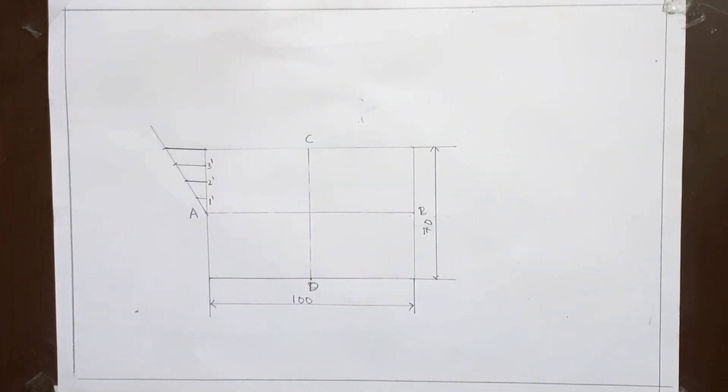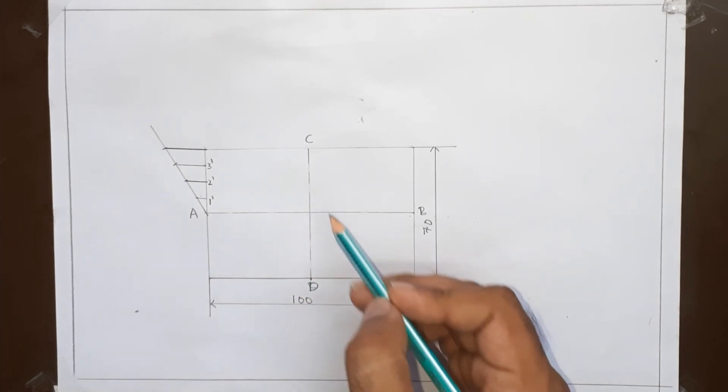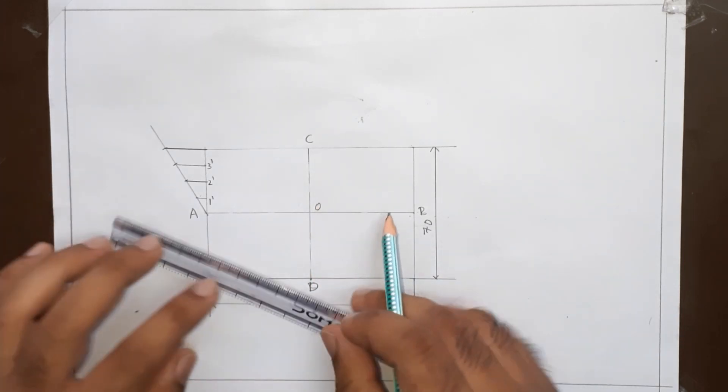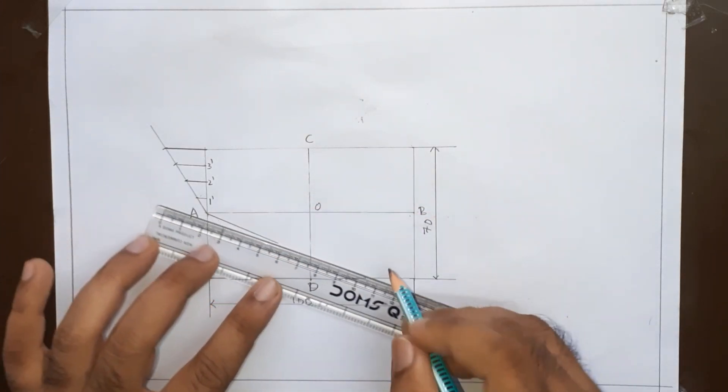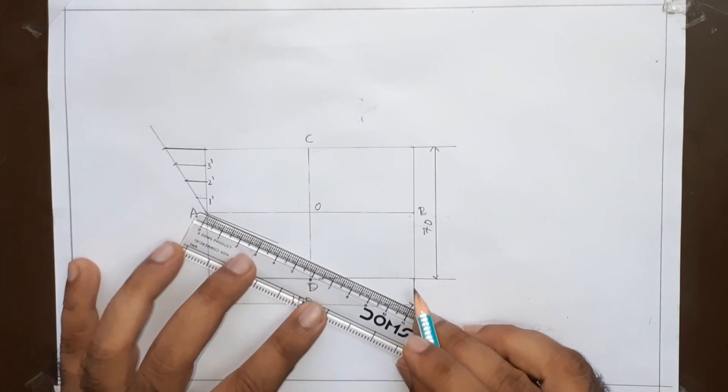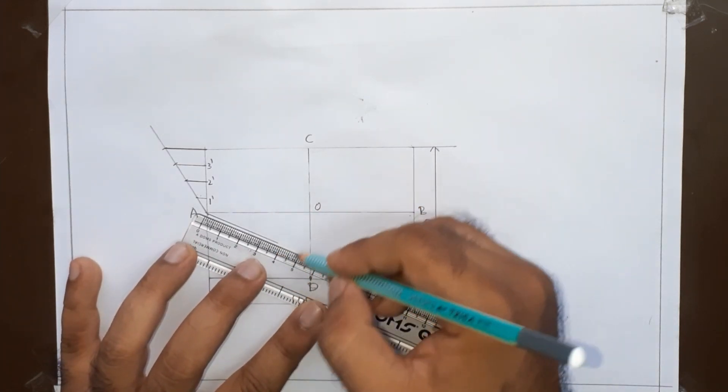Now repeat the step on this line. Let this point be equal to O. From this point, we will randomly draw a line.